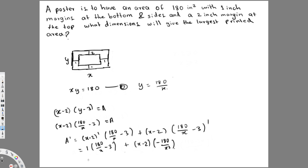Expanding and simplifying: 180/x − 3 minus 180x/x² plus 360/x². The 180/x terms cancel, leaving −3 + 360/x². So A' = −3 + 360/x².